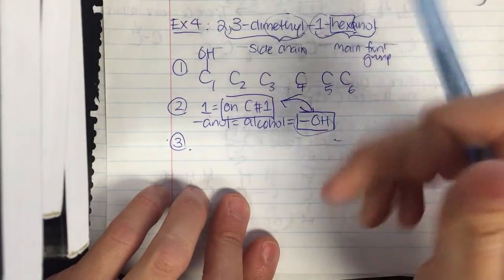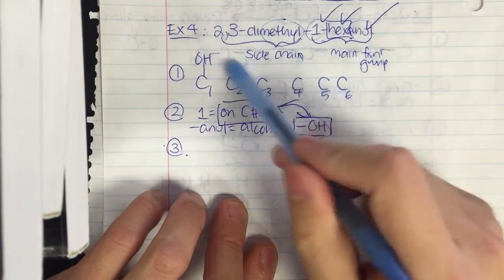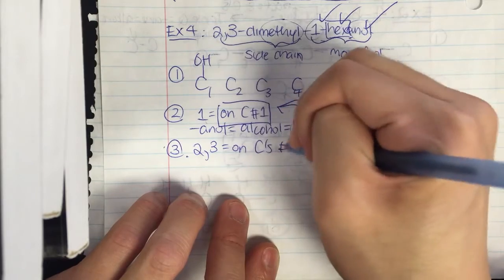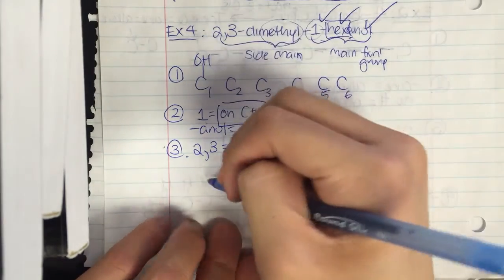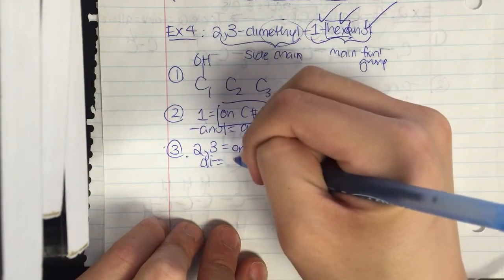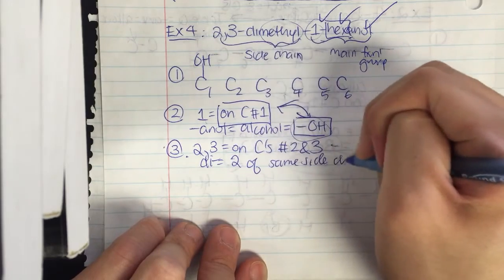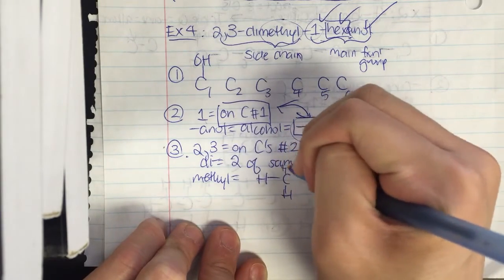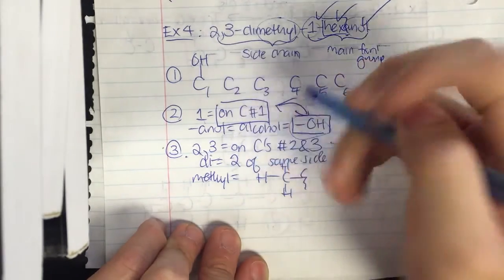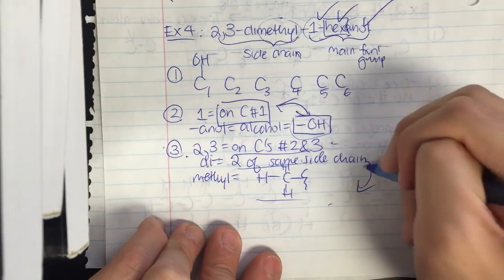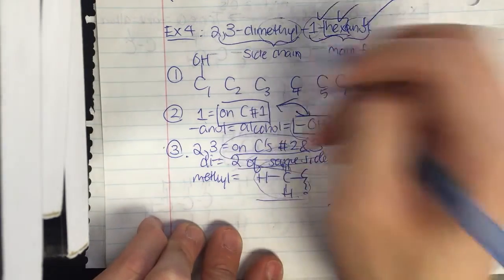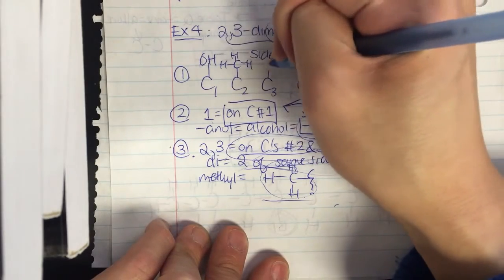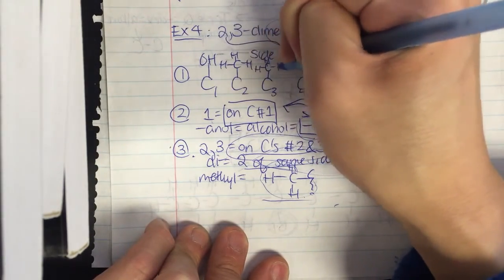In step 3, the numbers 2 and 3 tell me the sidechains go on carbons 2 and 3. The prefix di tells me I have two of the same sidechain. And methyl is CH3. So I draw two CH3 sidechains — one on carbon 2 and one on carbon 3.